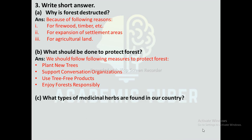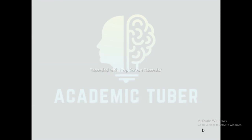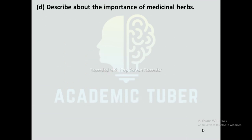Question number C: What types of medicinal herbs are found in our country? The medicinal herbs found in our country include Harro, Barro, Tulsi, Amala, Sarpagandha, Timur, Padmachal, Panchonle, Yarsagumba, etc.